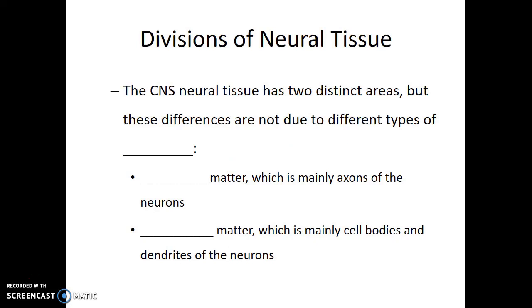The central nervous system neural tissue has two distinct areas. What's surprising is that these differences are not due to different types of tissues — they're both made of the same type of cells, just different regions of the neurons. The white matter is composed primarily of the axons of the neurons, and many of these axons will have myelin sheaths on them. Whereas the gray matter is composed primarily of cell bodies and dendrites of the neurons.